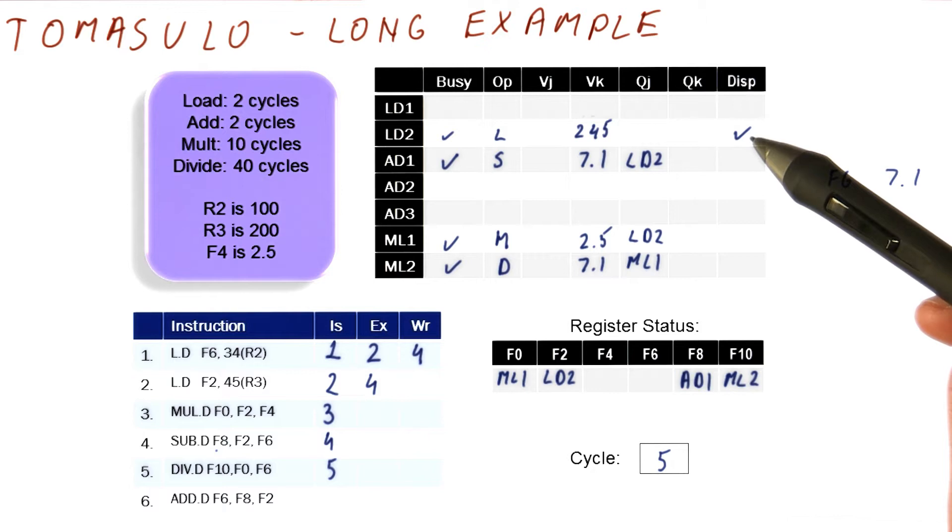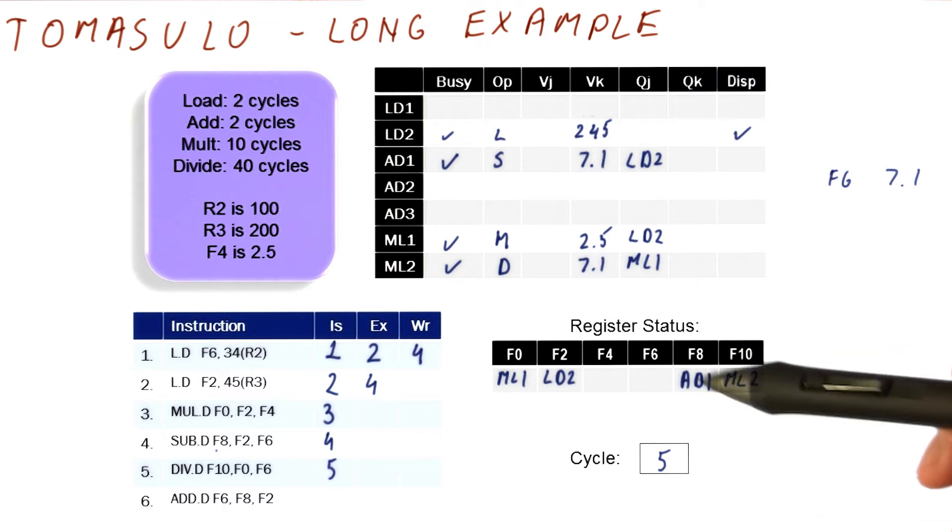In this cycle, this load is still executing. It's going to broadcast this result in the very next cycle, in cycle six. And there is no result that gets broadcast in this cycle either. So we are basically done with cycle five.